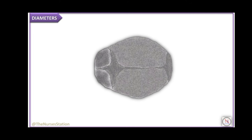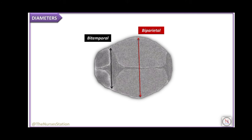The transverse diameters concerned in the mechanism of labor include the bi-parietal diameter, measuring 9.5 centimeters, which extends between the two parietal eminences. Whatever may be the position of the head, this diameter nearly always engages. The bi-temporal diameter measures 8 centimeters and is the distance between the antero-inferior ends of the coronal suture, or the farthest points on the coronal suture.